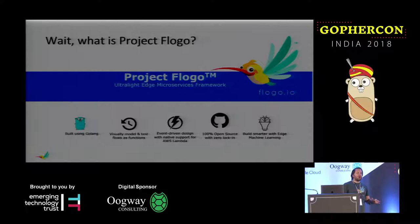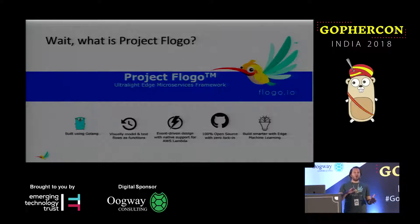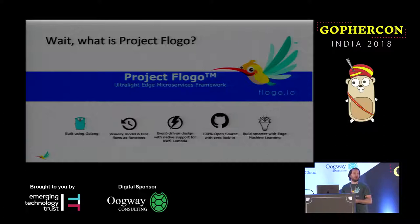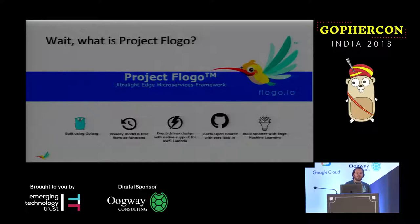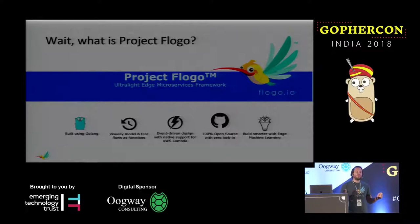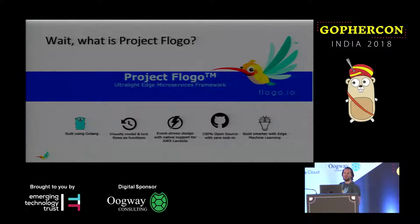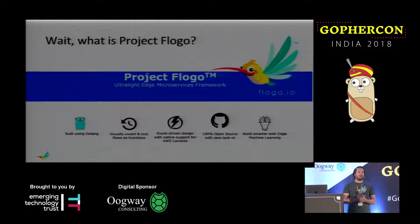So what is Project FloGo? Project FloGo is an open-source edge microservices framework. About one and a half, two years ago the team sat down. At TIBCO Software we build software in a number of different languages — Java, .NET, even C. We've got quite the spectrum of different software and technologies, but we essentially looked at the IoT landscape. If we wanted to build a technology that targeted the IoT space, we simply couldn't take an existing technology stack and retrofit it. We needed to build something new, from the ground up, with a specific feature set.